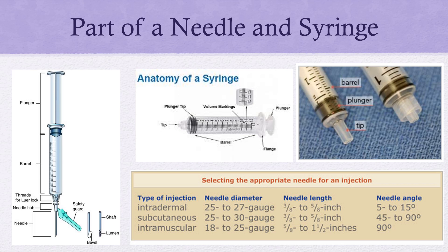For subcutaneous injections, the gauge is similar to intradermal — we need a small needle. Large needles are just going to cause pain. The needle length is also very similar because the subcutaneous or adipose tissue is just below the dermis, so we only need a short needle to get into that tissue.